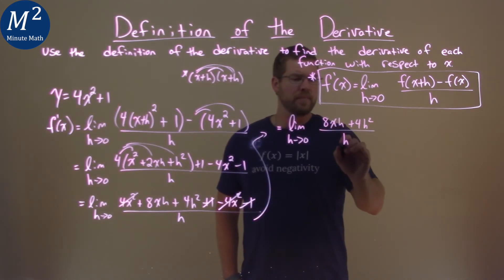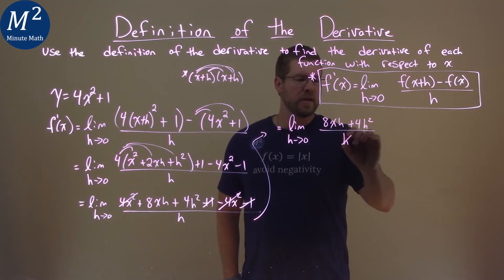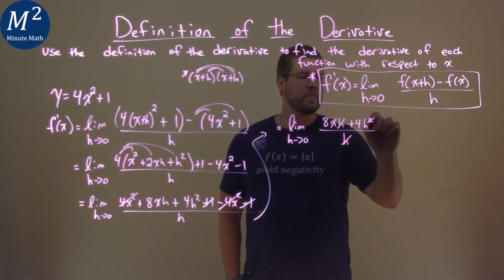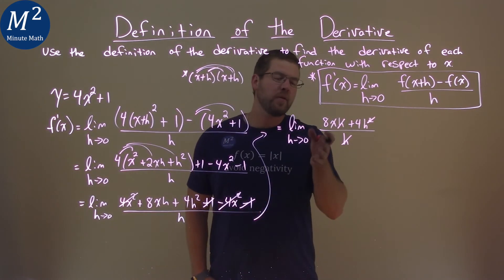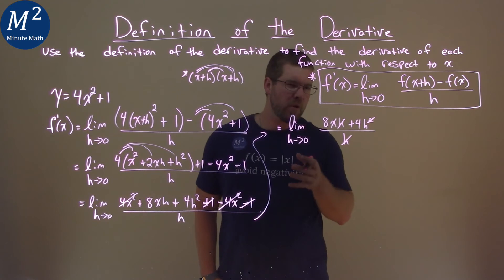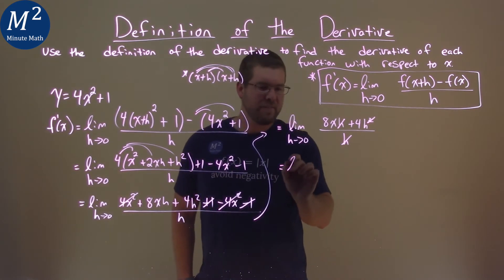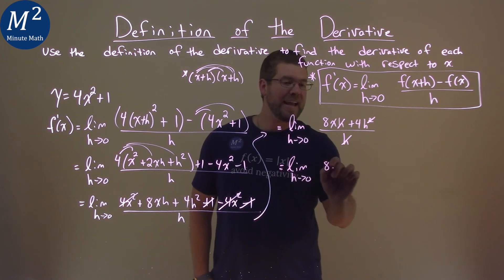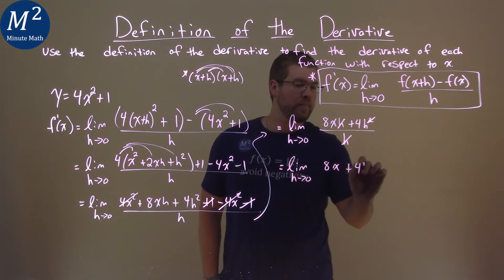Well, notice we can cancel something out. We have an h here in the denominator. Cancel out this one in the numerator and the squared right there. So now that we've canceled out the h's, what are we left over with? Well, we have the limit as h approaches zero of 8x plus 4h.